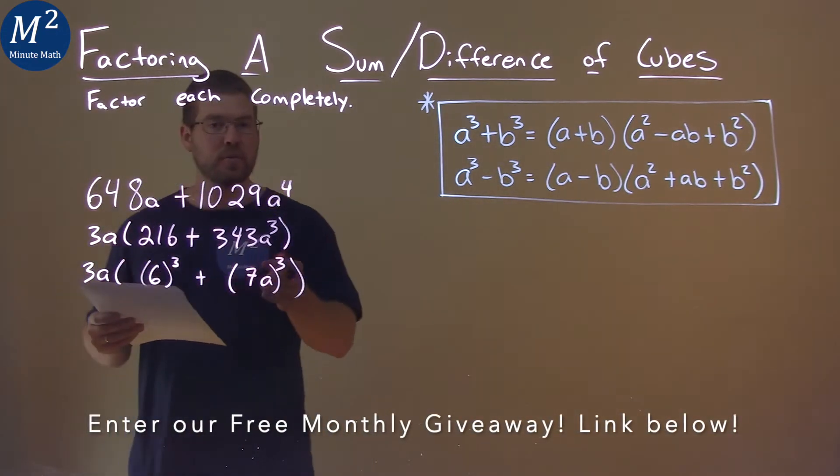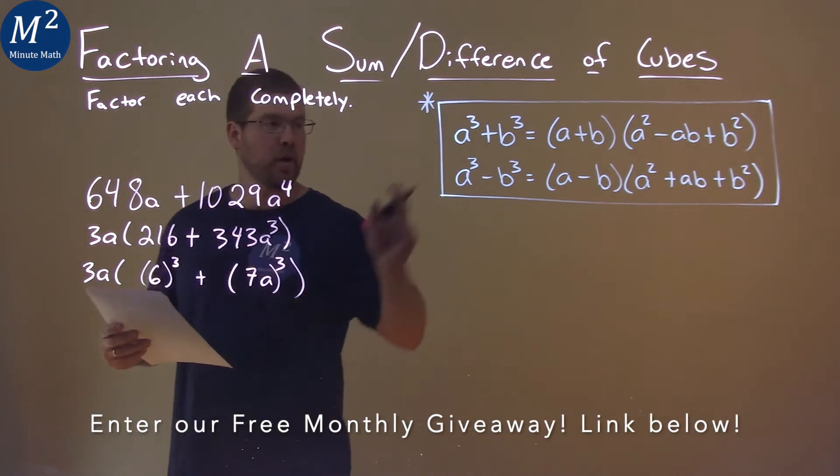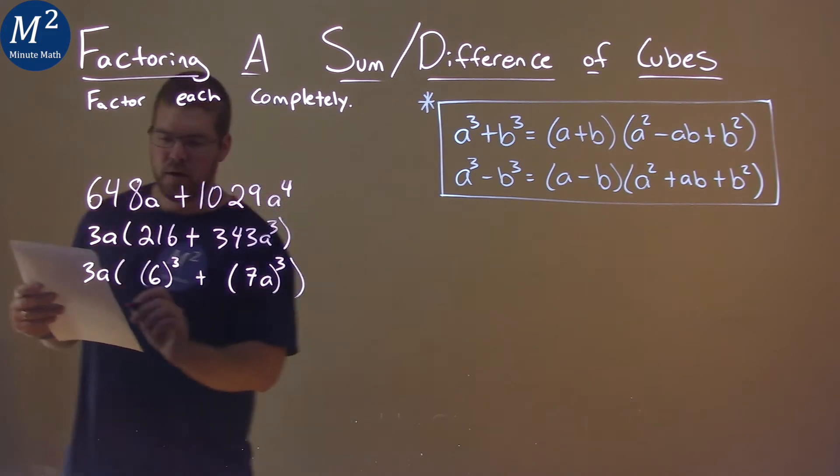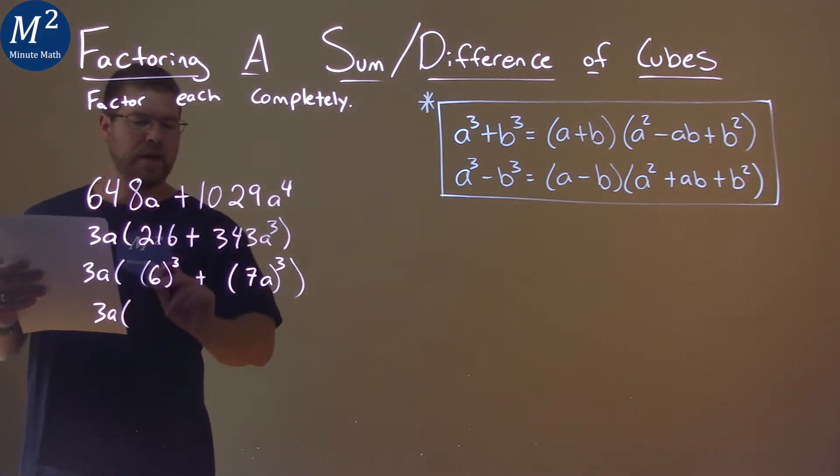So now we have a sum of cubes, and we use our formula. Our a value is 6, and our b value is 7a. This 3a comes down, and with a value being 6,